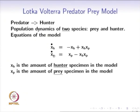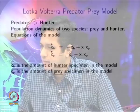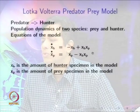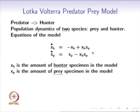On the other hand, the prey itself is just going to multiply — it would increase exponentially when left to itself if there had been no hunter species — and interaction with the hunter species causes xp to decrease. The quantities xh and xp are all positive, and whether they increase or decrease depends on their own population and also the population of the other species.